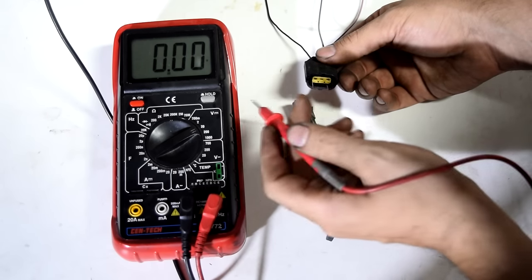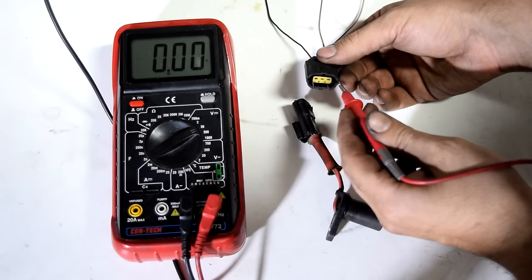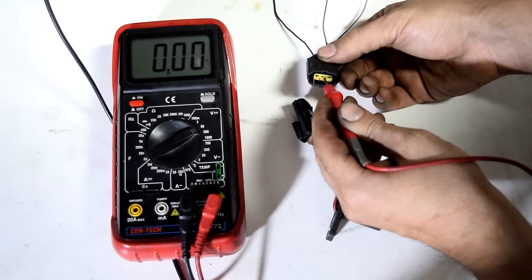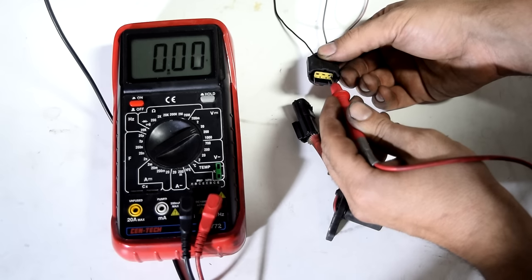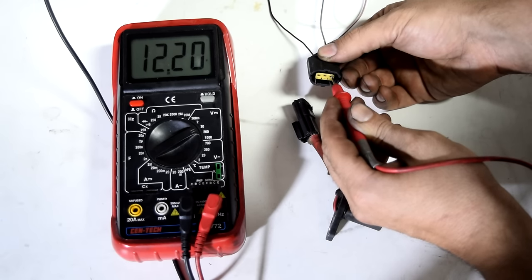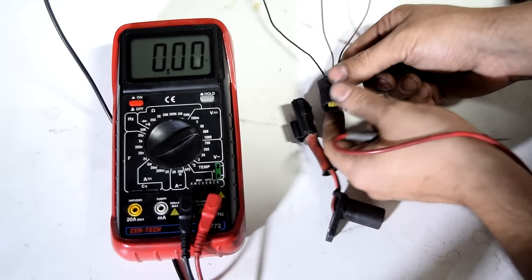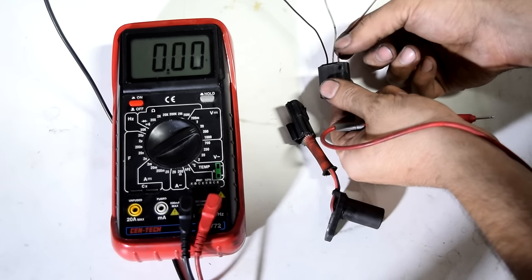And then you want to remove the wiring harness for your connector and then test each pin and the one that gives you voltage, that's your constant wire. So here in our case it's going to be this third and last one which is giving us 12.2 volts so we're going to write this one down, this red one, as our constant wire.